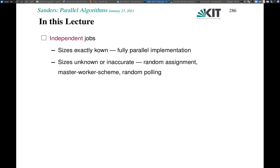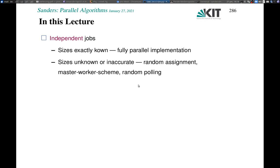We will make lots of simplifying assumptions. Most of the time I will talk about independent jobs — they don't have to communicate, it doesn't matter where they are executed, they don't have to wait for others. We will at least sometimes assume that the sizes are exactly known. We also look at the case that sizes are unknown or inaccurately known; there we use a random assignment scheme, a popular and simple centralized scheme called master-worker, and a highly dynamic scheme called random polling. At the end, I will compare these four basic approaches.